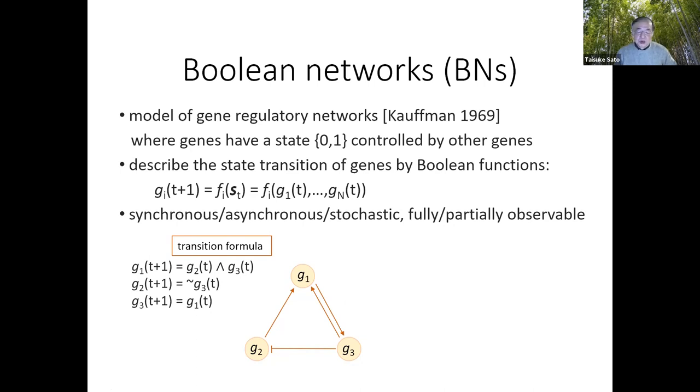Here is a small example of Boolean networks consisting of three genes, G1, G2, and G3. The next state of G1 is determined as the conjunction of G2 and G3 at the current state. The next state of G2 is determined as not G3 at the current state. These formulas are called transition formulas. Then these transition formulas generate a sequence of state transitions like this: 111, 101, 001, and so on.